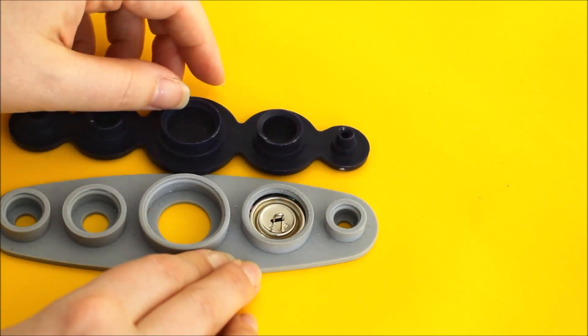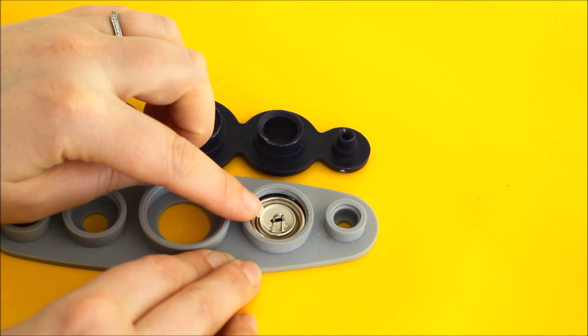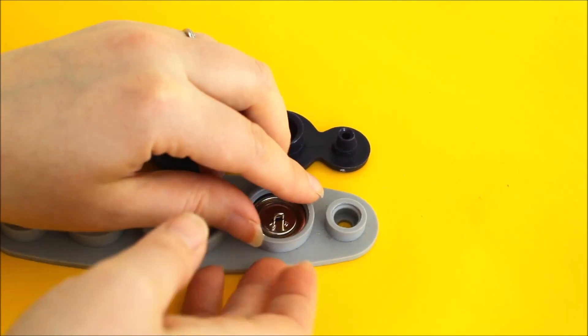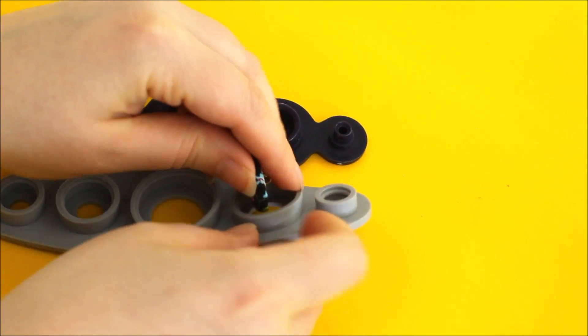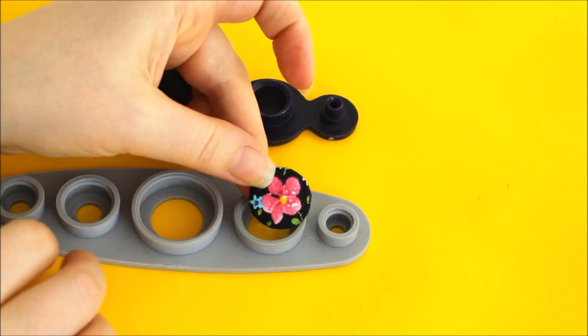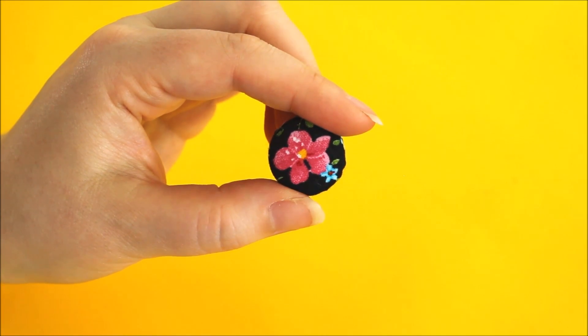So open it back up. And inside you'll have your perfect button. And now your cloth button is ready to sew on.